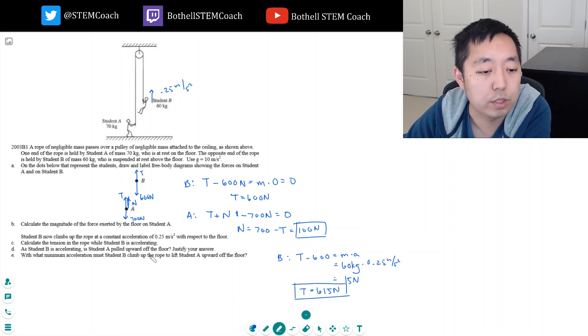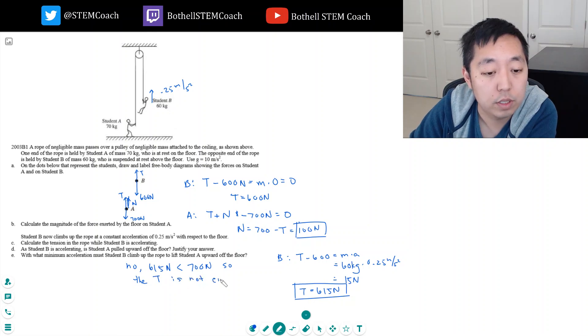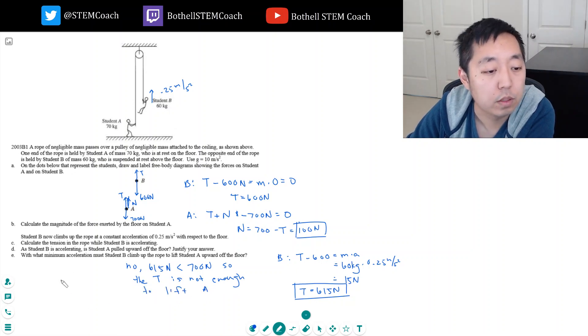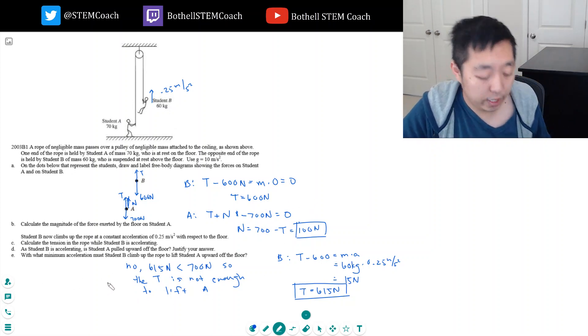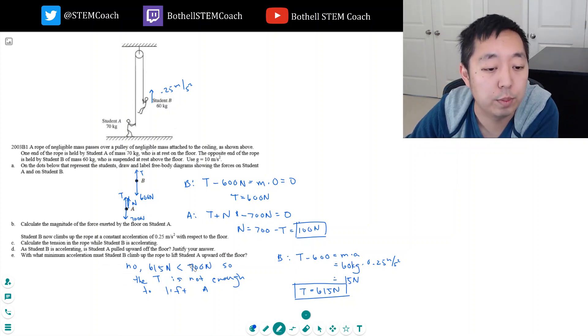As student B is accelerating, is student A pulled upward off the floor? Justify your answer. Well, what's pulling him up now? The tension up is 615 Newtons, but gravity is still larger, so no. 615 Newtons is less than 700 Newtons, so the tension is not enough.